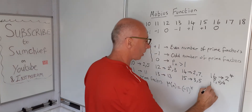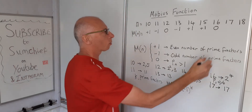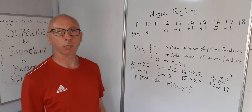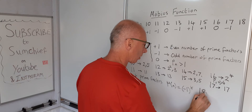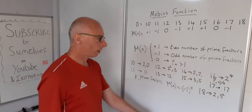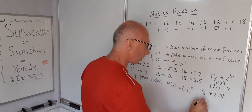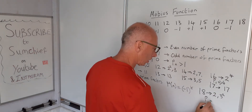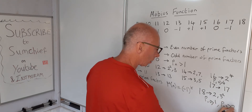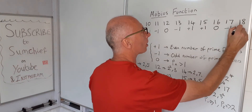17 is a prime number, so there's only one prime factor, giving minus 1. Then 18 is made up of 2 and 3 squared — 2 times 9 is 18. The first prime factor 2 appears once, but the second prime, 3, appears twice. So p of n is greater than 1, and that gives us 0.